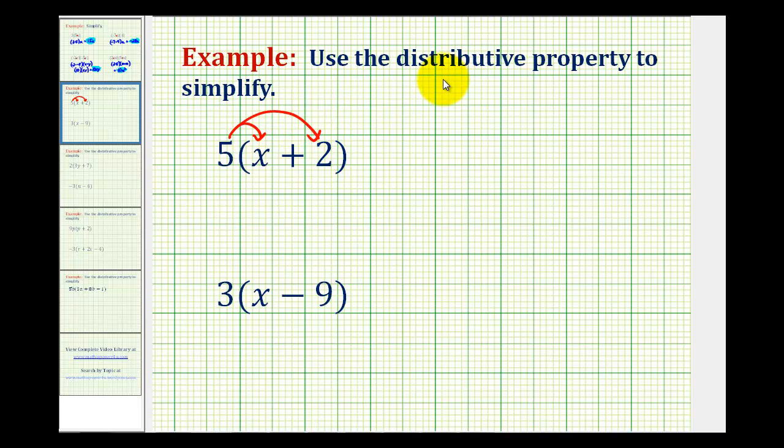And sometimes you'll hear distribution referred to as multiplication across addition or subtraction, and this is why. So we'll have five times x plus five times two.